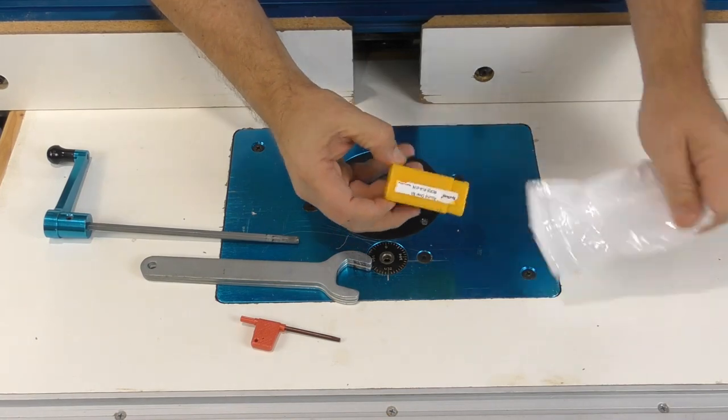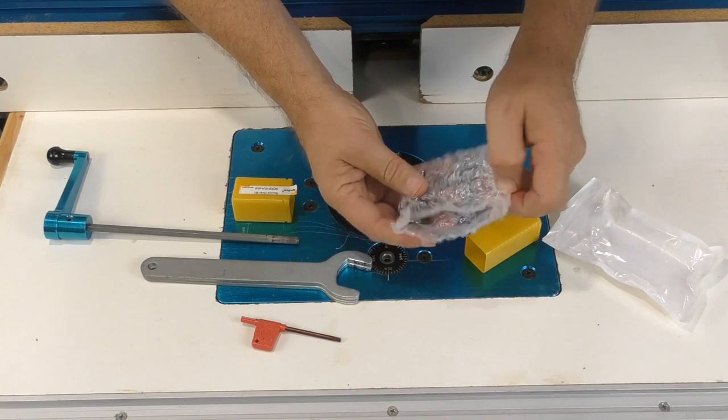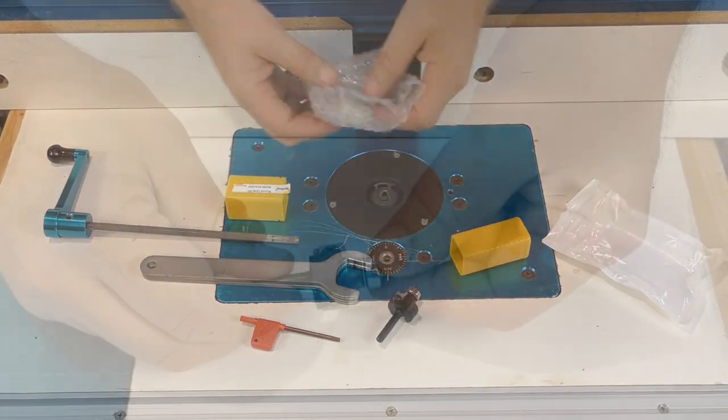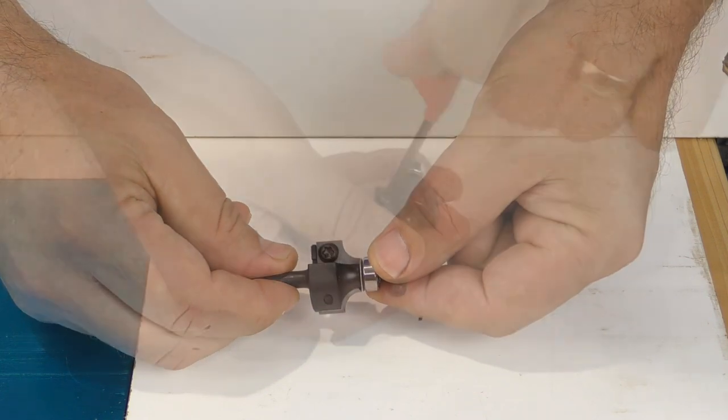The bit itself is well protected, bubble wrapped inside a plastic container. What sets this bit apart is that the carbide cutters are not brazed onto the shank—they're mounted with screws.